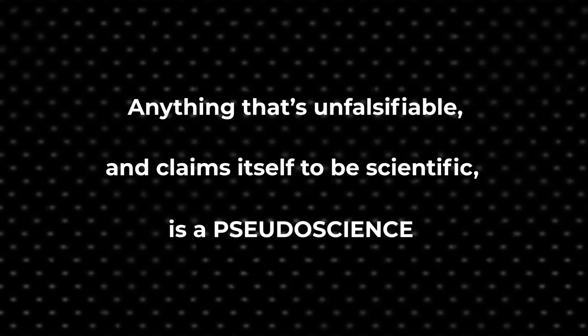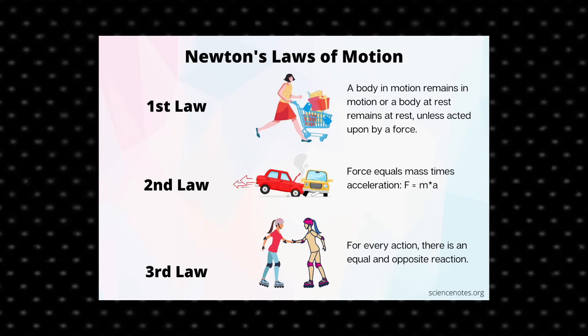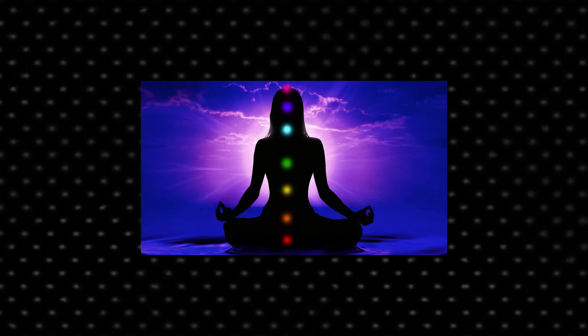Falsifiability — does a statement have a falsity condition you can test for? — is the criterion that must be satisfied for a statement to be scientific. Anything that doesn't satisfy this and claims to be scientific is pseudoscience. Einstein's relativity, quantum mechanics, Newton's laws of motion, the theory of evolution — these are all falsifiable. In fact, anything mathematical is automatically falsifiable because it rules things out. But karma, astrology, and almost anything under spirituality are unscientific because they are unfalsifiable — they rule nothing out.